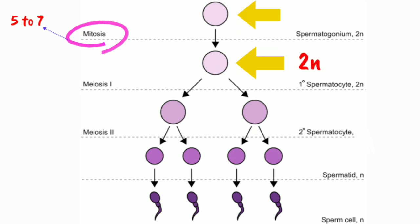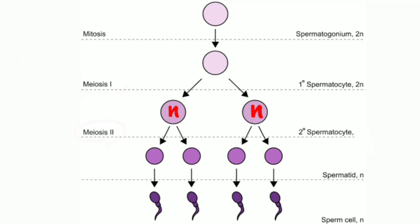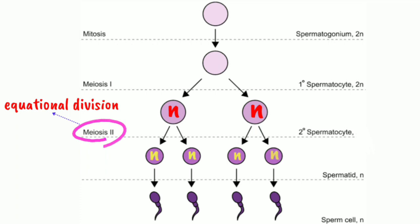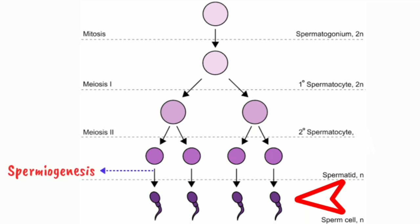The primary spermatocyte undergoes meiosis one, which is a reductional division, and secondary spermatocytes are formed which are haploid. This undergoes meiosis two, which is an equational division, and haploid spermatids are formed which are circular in shape. These are converted into typical spermatozoa and this process is known as spermiogenesis.